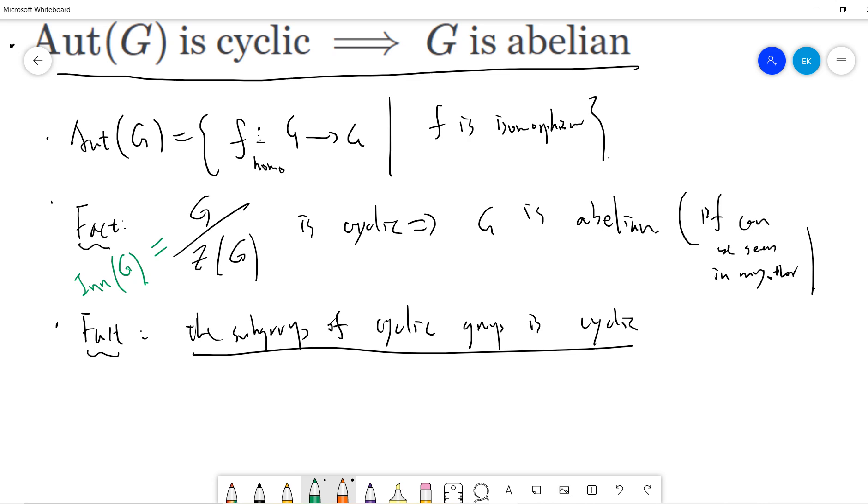Aut(G) is cyclic. We also know that the inner automorphism is a subgroup of Aut(G). So Inn(G) is also cyclic.